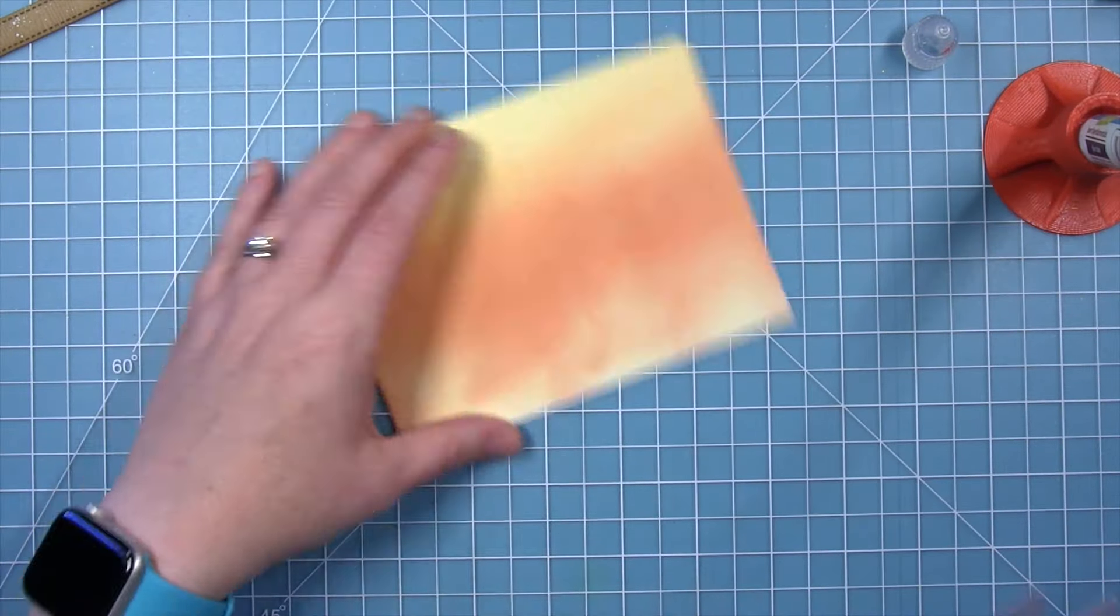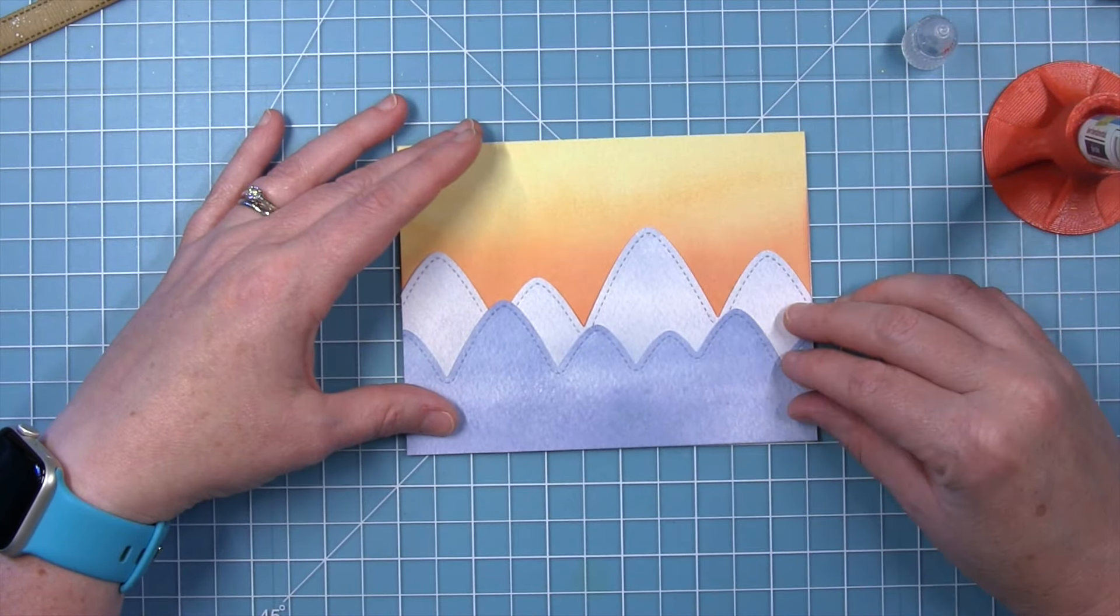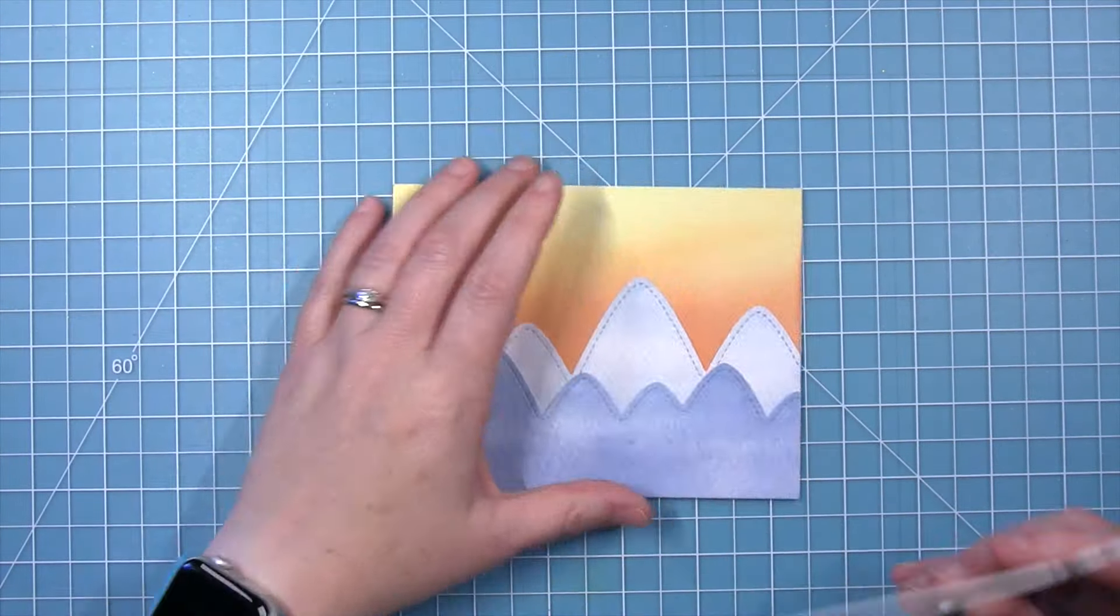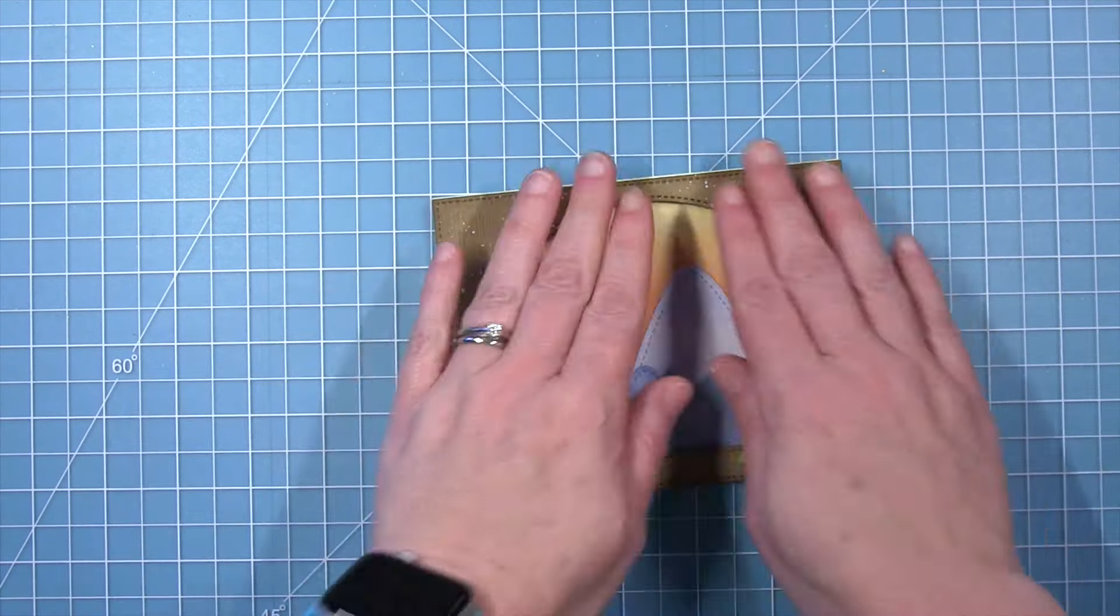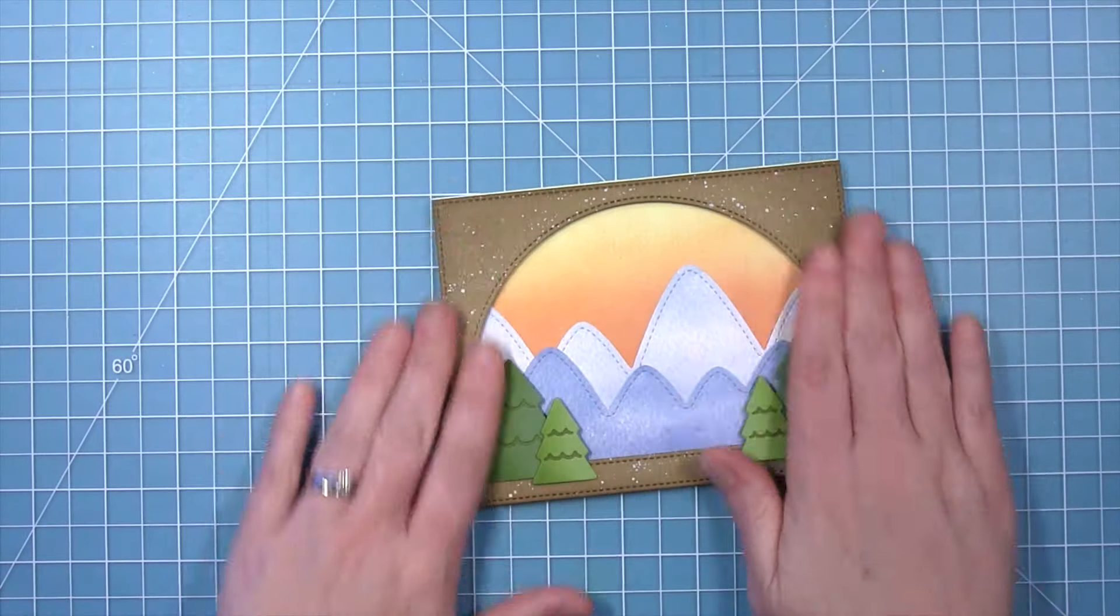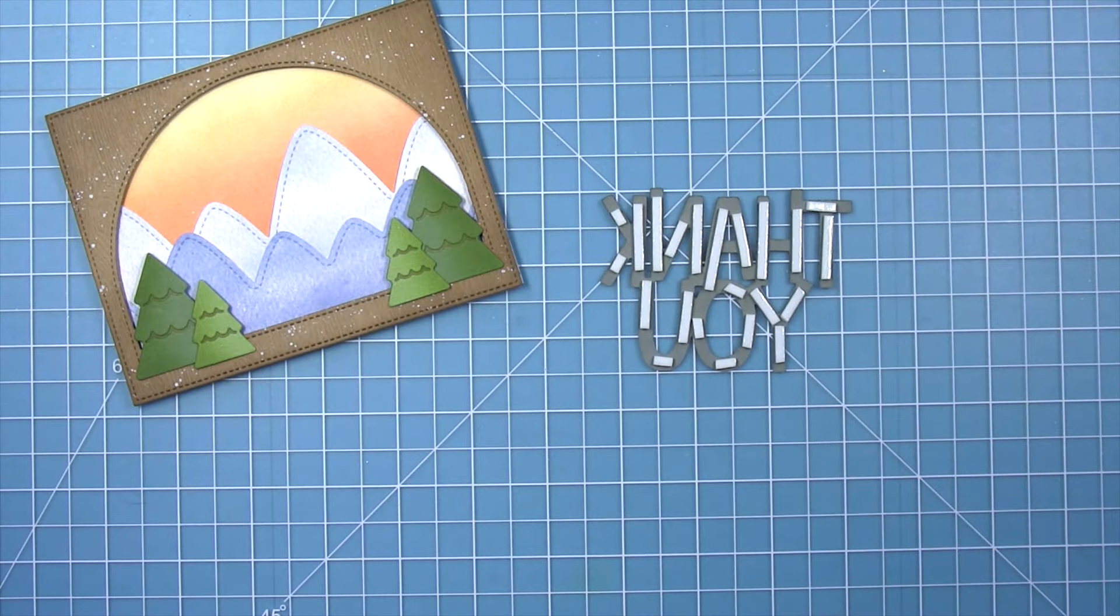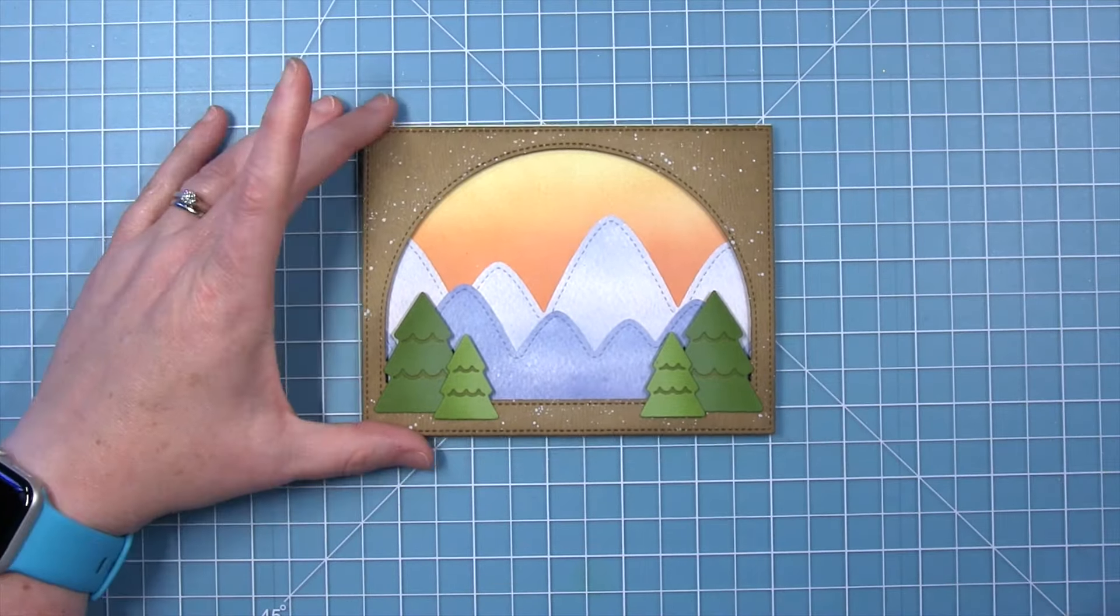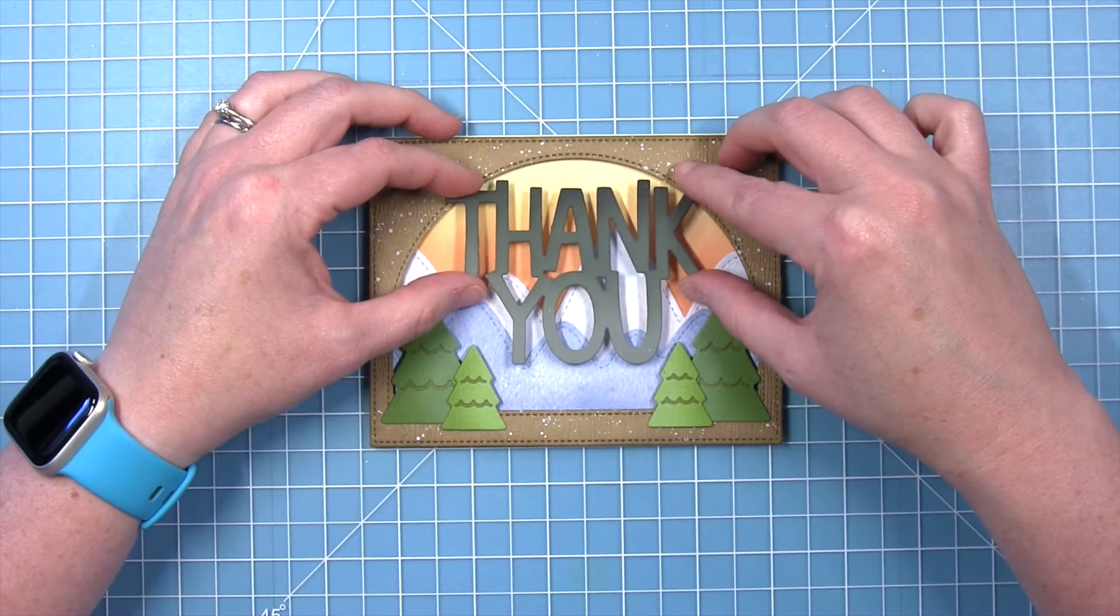Then I can add my mountains. I did think about popping these up so I had some dimension, but I wanted the frame popped up, so I decided to glue these directly to the background so that they kind of sit behind. And then here are all the foam that I put all over the frame. Those foam strips are perfect for this frame because of those small areas close to the edges. And I just think that this looks really cool with the mountains sort of back in the background. And then I added the foam strips to the back of my thank you as well so that it could be popped up and we get a nice shadow between the sentiment and the scene behind it.